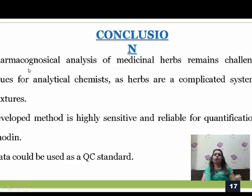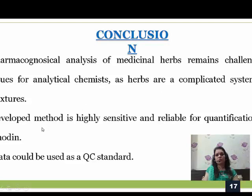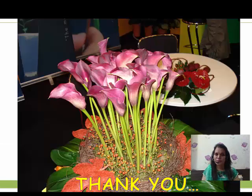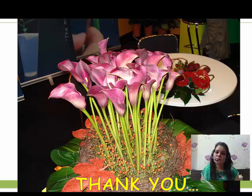In conclusion, this process can be applied to pharmacognostical analysis of medicinal herbs, which is a very challenging issue for analytical chemistry as herbs are complex mixtures. The developed method is highly sensitive and reliable for quantification of imodine, and this data can be utilized as a quality control standard. Hope you have understood this HPTLC technique. Please like, share, and subscribe. Thank you.